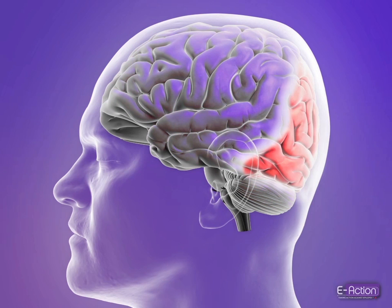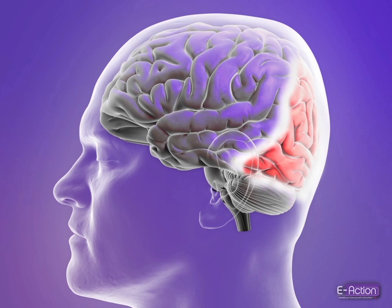The occipital lobe is responsible for visual perception and processing. If a focal seizure occurs in this part of the brain, it may produce visual disturbances or visual hallucinations, such as multicolored balls or patterns.